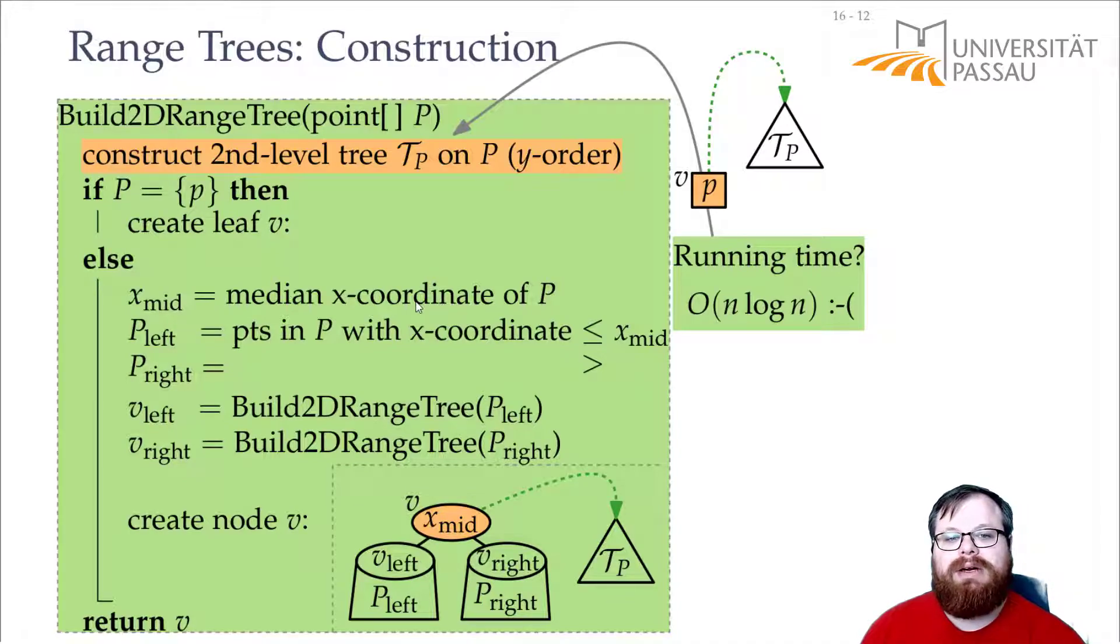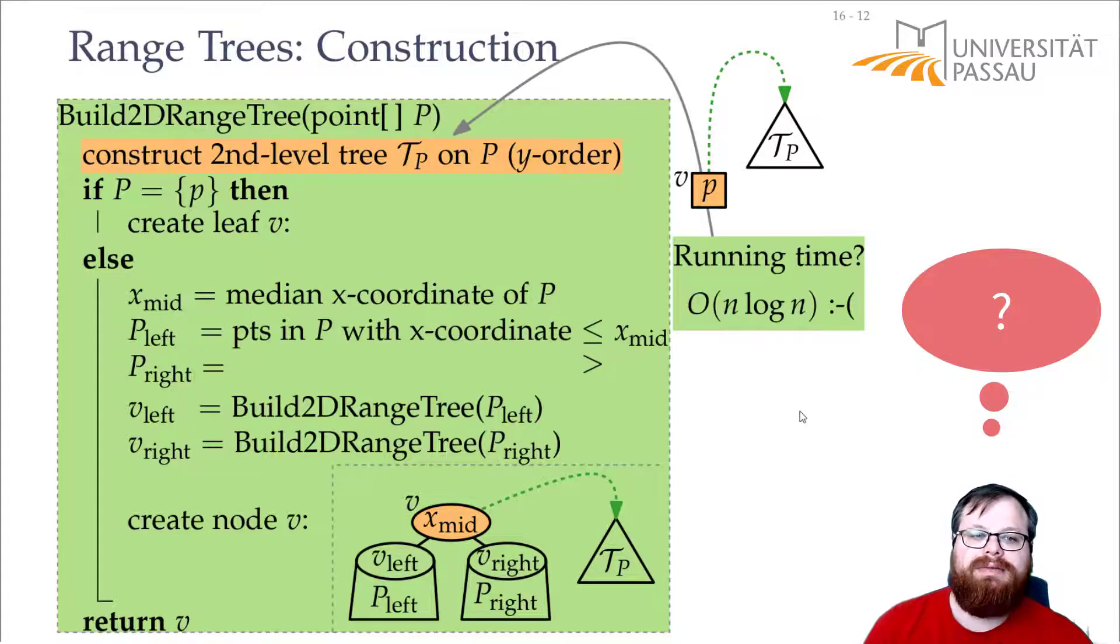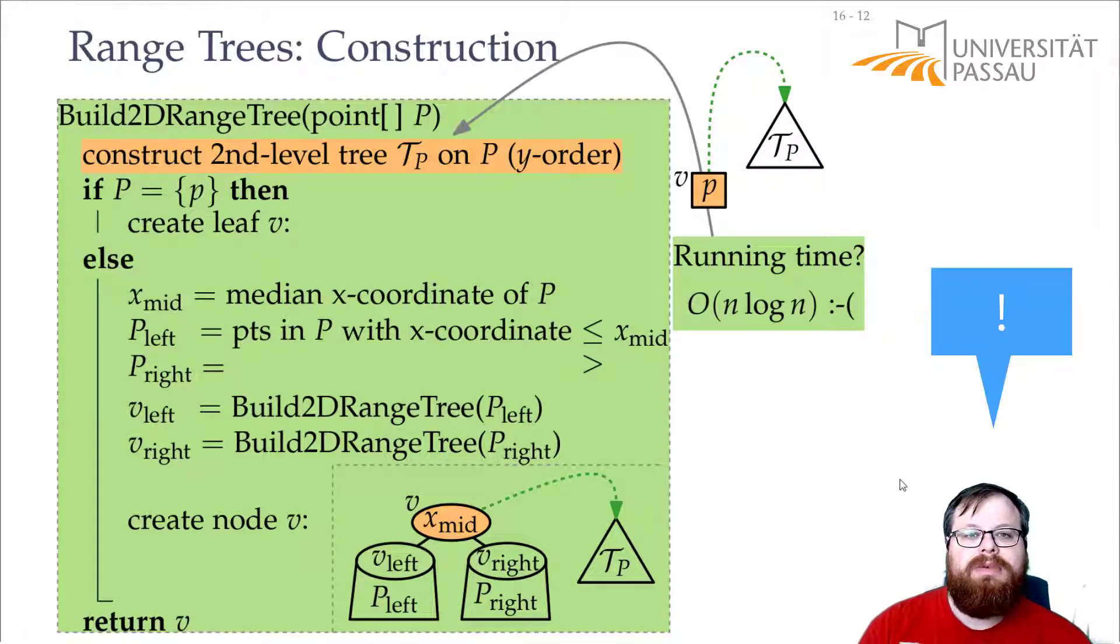I still would like to do it in order of n log n time. So do you have any idea how we can overcome this? That we at every step have to sort all the points by y order to build the second level tree?